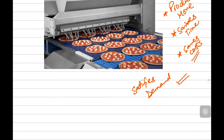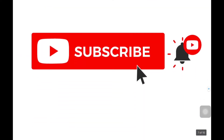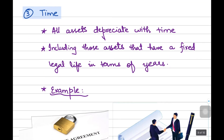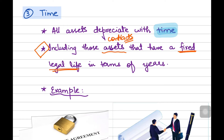We are done with two factors — physical deterioration and economic factors. Let us move to the third factor, which is time. Both of the factors we have just covered — physical deterioration and economic factors — also include depreciation that is happening because of time. Of course with time, assets get obsolete. Of course with time, the condition of non-current assets gets changed. But one important thing that also comes under the time factor is that there are certain assets, or you can say certain contracts that classify as non-current assets, that have a fixed legal life in terms of years.